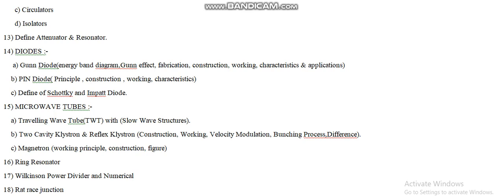Moving on to part C, the magnetron: we have to describe the working principle, construction, and figure for the magnetron. These are all the microwave tubes. According to question number sixteen, we need to describe the ring resonator — this is also an important question and you have to describe it theoretically.